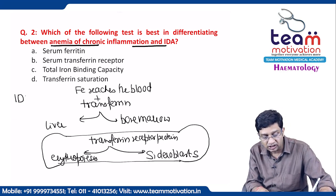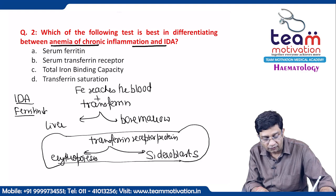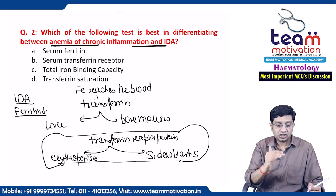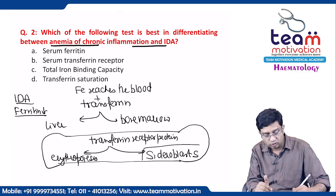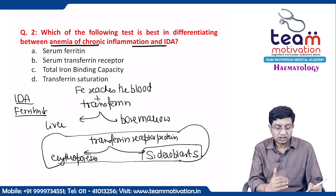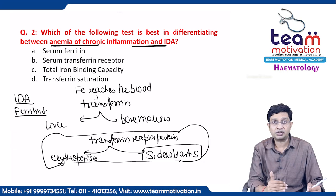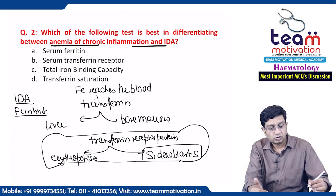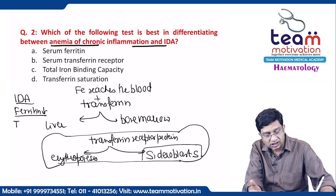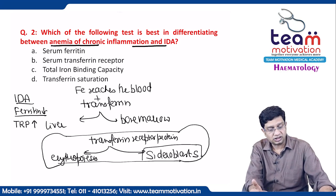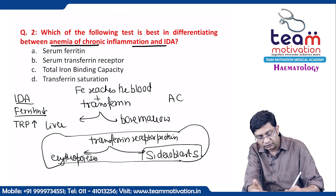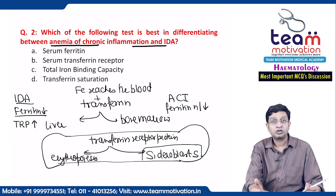In iron deficiency anemia, ferritin — the storage form of iron — is decreased. The low ferritin signals transferrin receptor protein to leave the bone marrow and enter the blood to bring more iron. As a result, serum transferrin receptor protein level is increased.